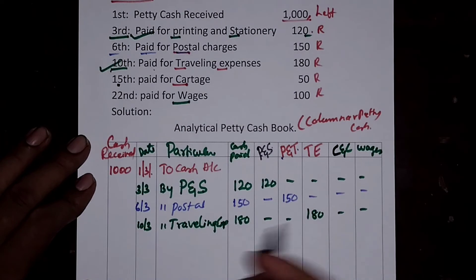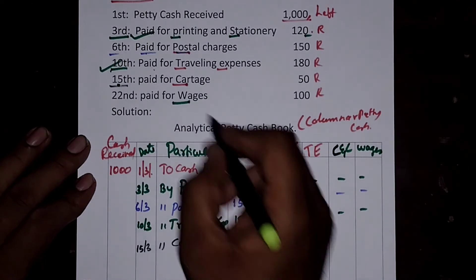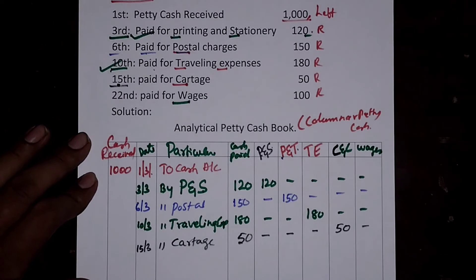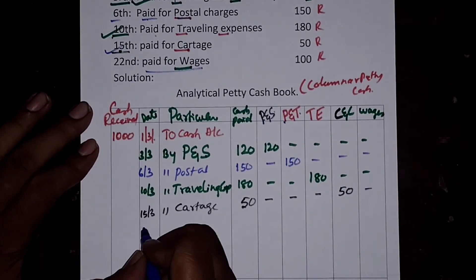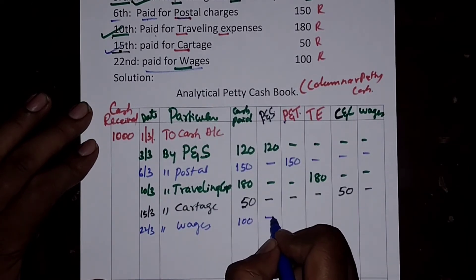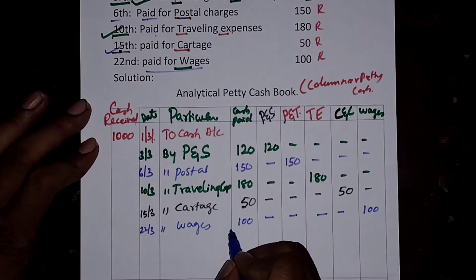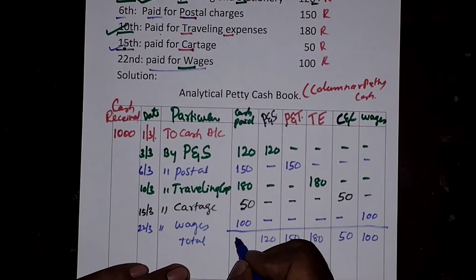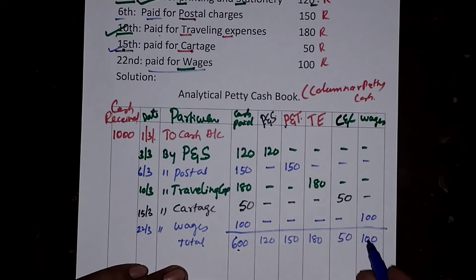On 15th March, paid for Cartage Rs. 50 — record 50 in the Coolie and Cartage column, dash in remaining columns. On 22nd March, paid for Wages Rs. 100 — record 100 in the Wages column, dash in all others. Now make a total — the overall total amount paid is Rs. 600.